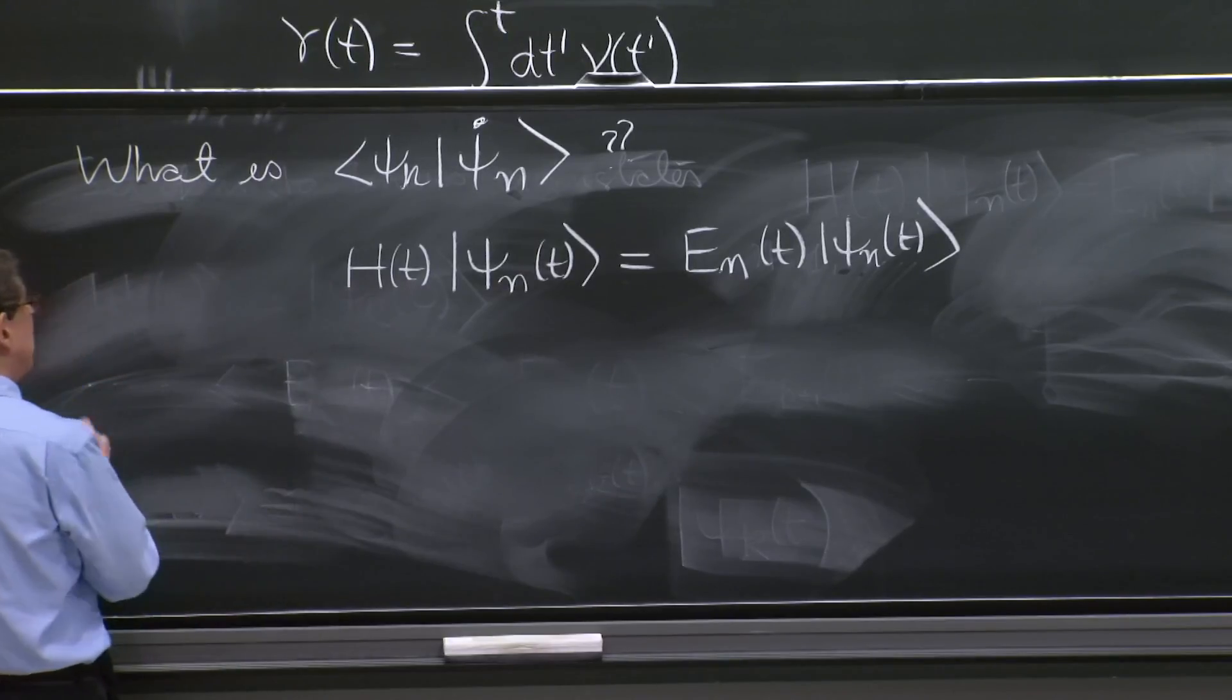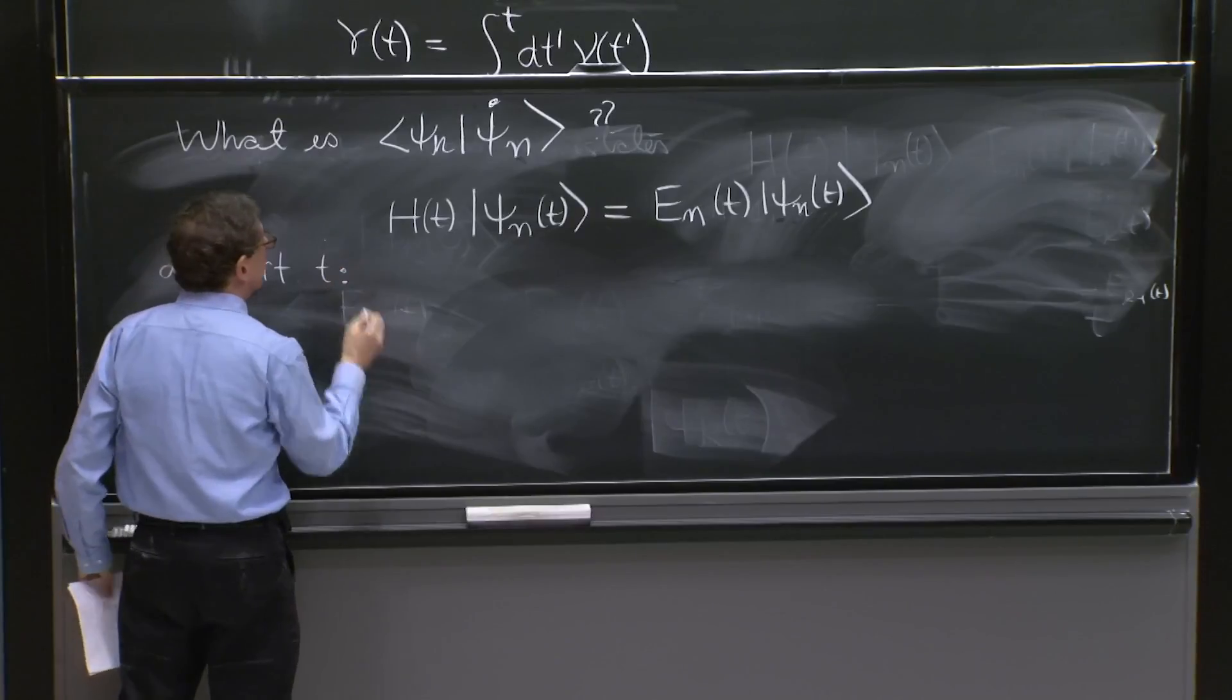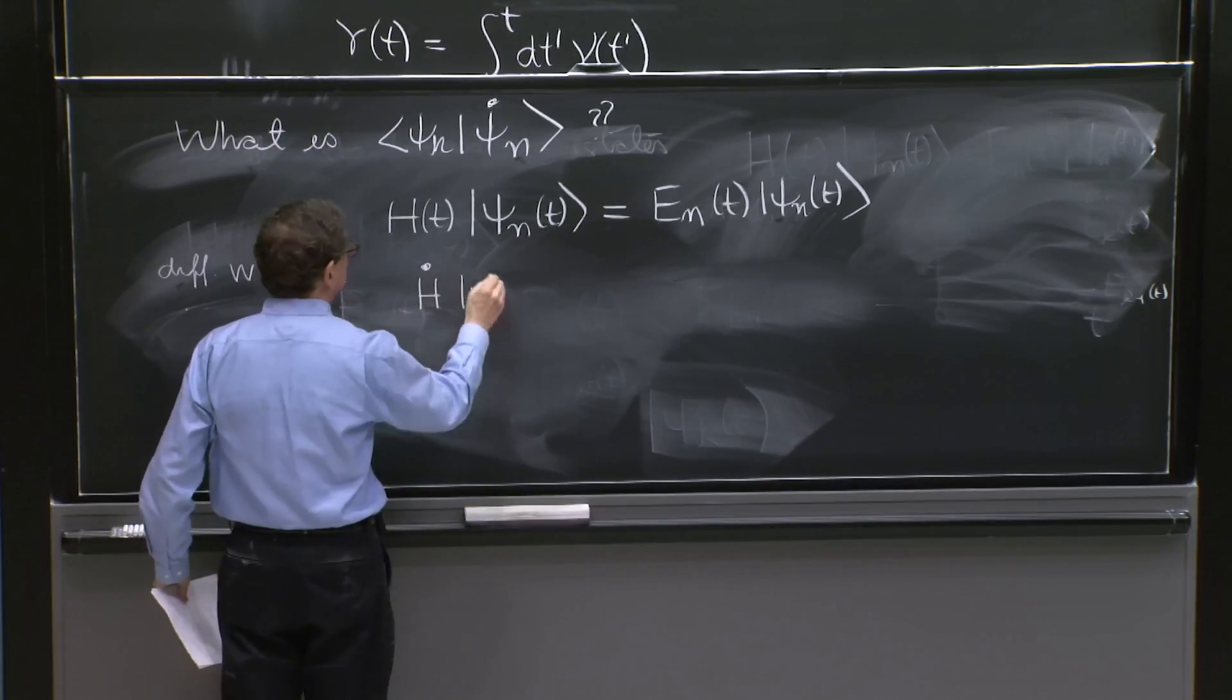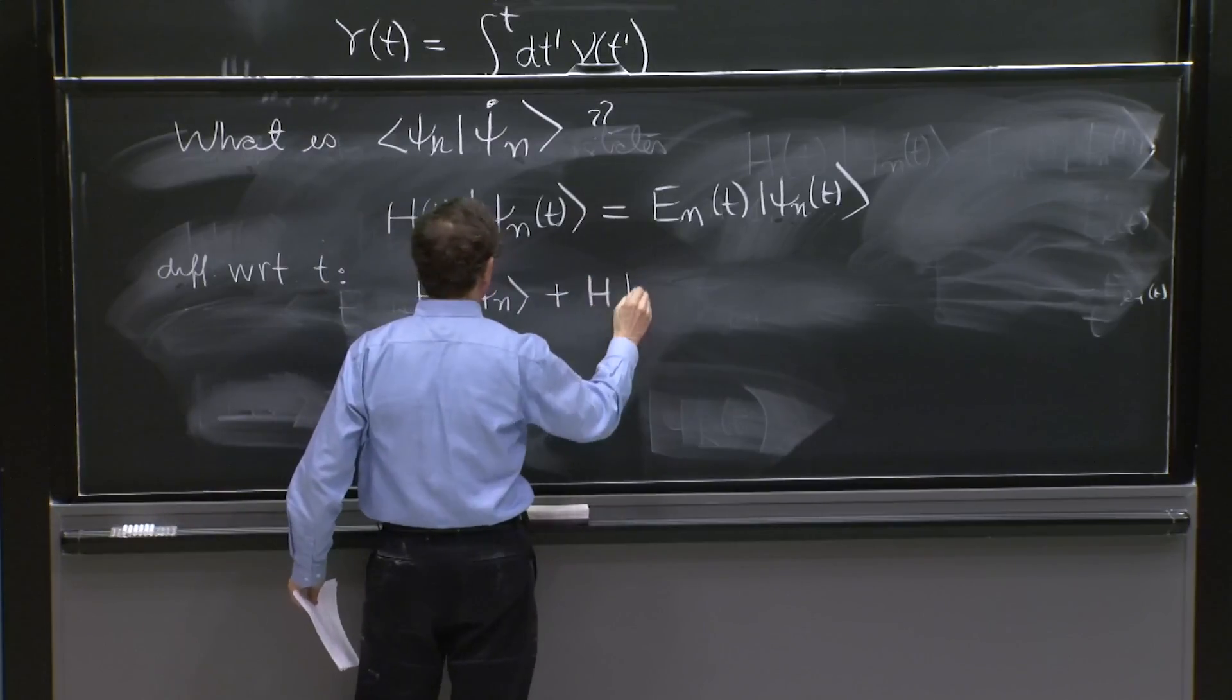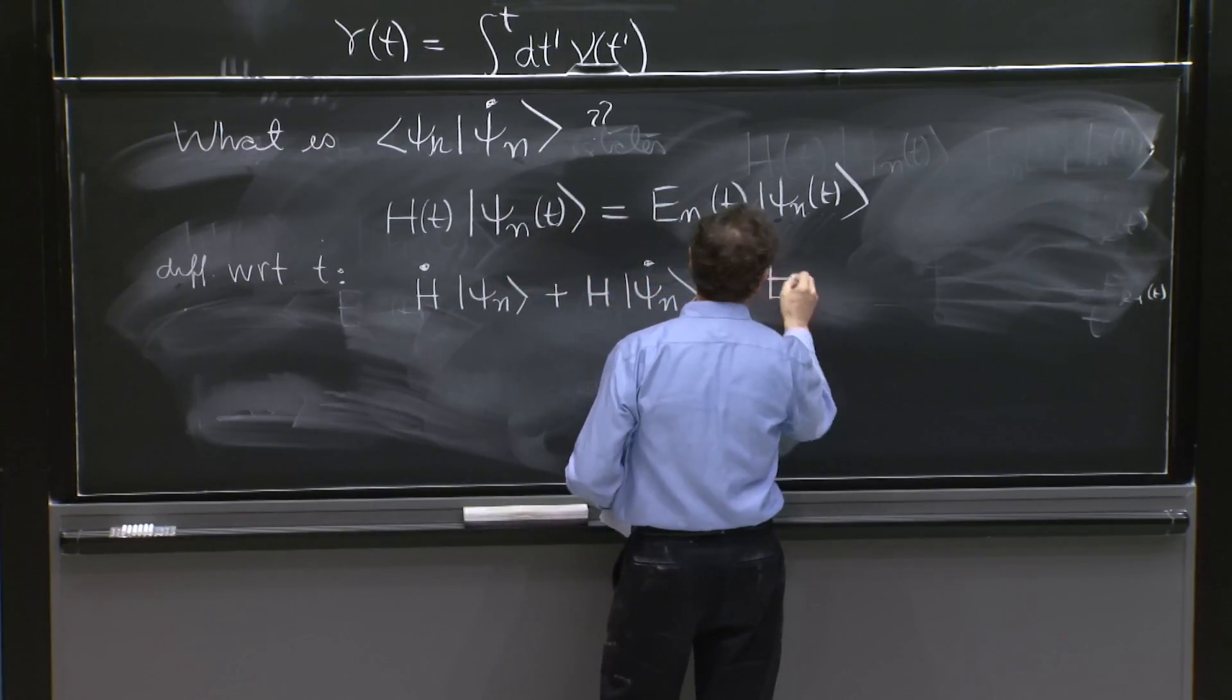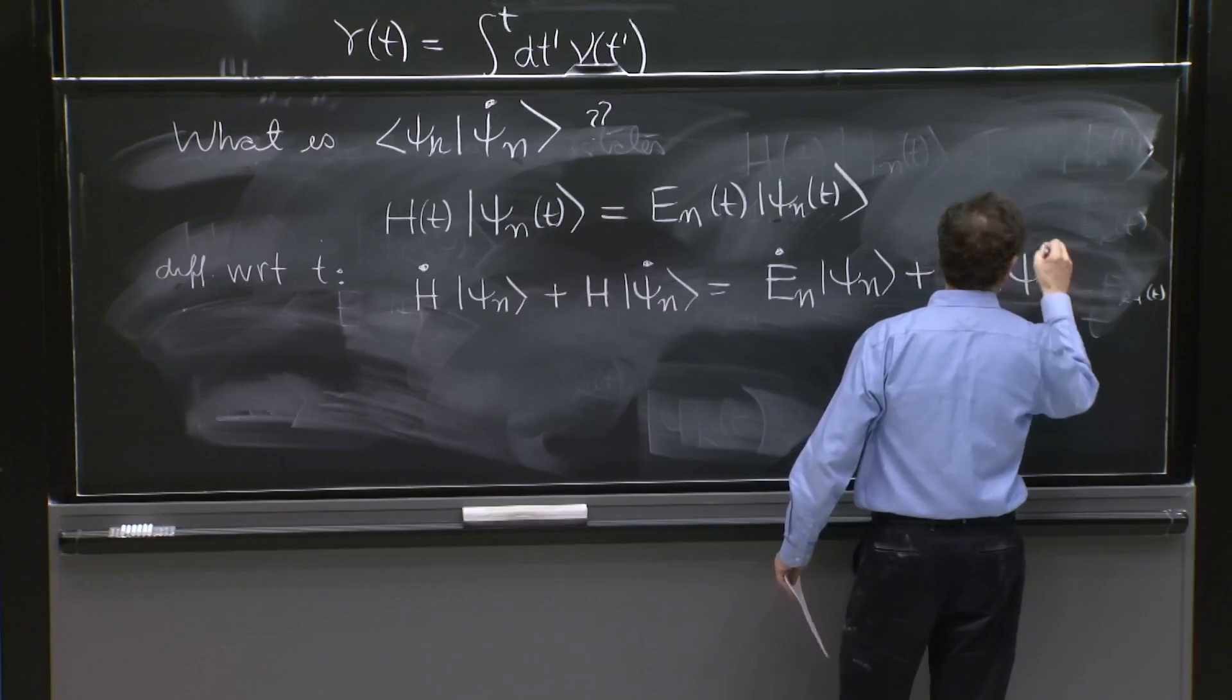So let's differentiate with respect to time. Let's write this as h dot times psi_n plus h psi_n dot equals e_n dot psi_n plus e_n psi_n dot.